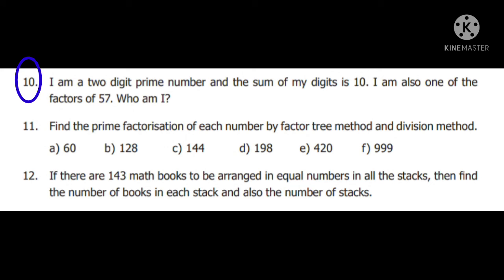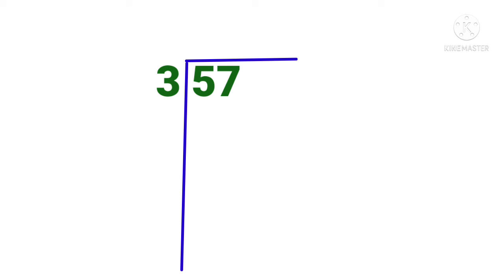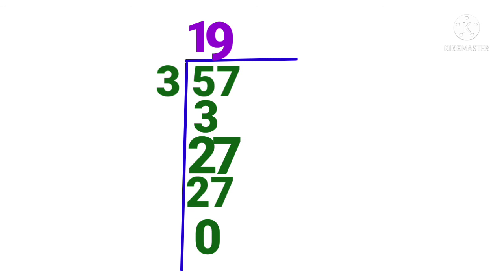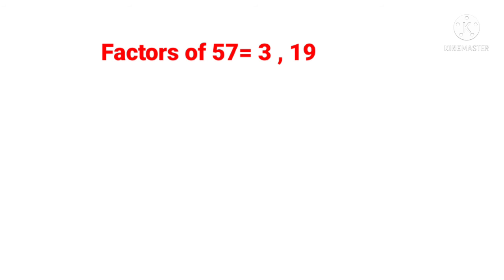Tenth sum: I am a 2-digit prime number, the sum of my digits is 10, and I am also one of the factors of 57. Who am I? Dividing 57 by 3 gives 19 – so the factors of 57 are 3 and 19. Since 3 is a 1-digit number, we check 19. 19 is a 2-digit number, and the sum of its digits is 1+9=10. So the answer is 19.